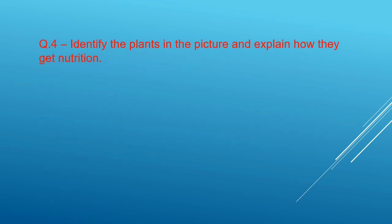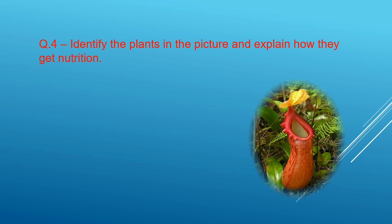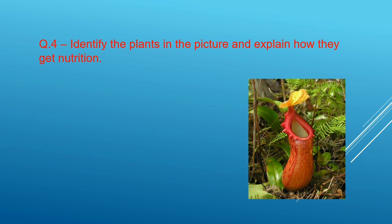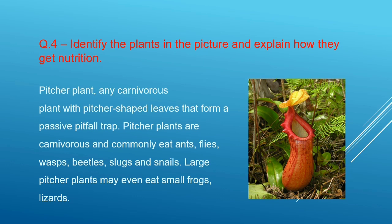Question number 4 is Identify the plants in the pitcher and explain how they get nutrition. And the pitcher is of pitcher plant which is carnivorous plant. Any carnivorous plant with pitcher shaped leaves that form a passive pitfall trap. Pitcher plants are carnivorous and commonly eat ants, flies, wasps, beetles, slugs and snails. Large pitcher plants may even eat small frogs and lizards.